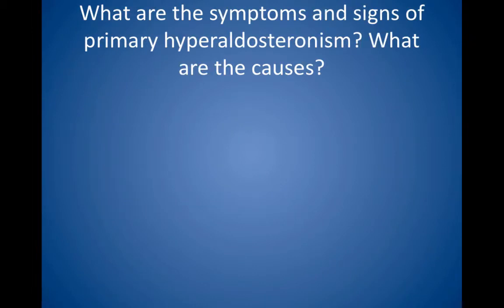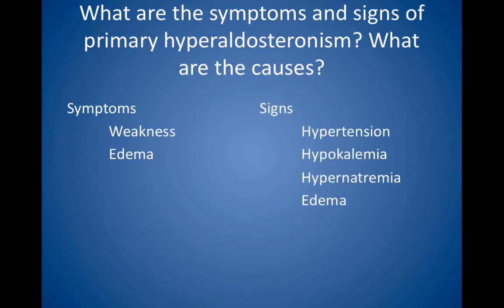What are the symptoms and signs of primary hyperaldosteronism, and what are the causes? Symptoms include weakness and edema. Signs include hypertension, hypokalemia, hypernatremia, and edema. Conn syndrome is caused by an aldosterone-secreting adrenal neoplasm. Because it is a primary disease, the renin levels are low. The rest of the endocrine axis responds appropriately to gland dysfunction. Order a CT scan of the abdomen to look for an adrenal mass. The treatment is surgical removal of the tumor.